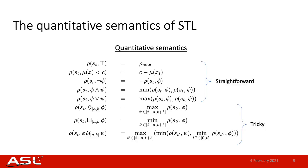Looking at the quantitative semantics shown earlier, a lot of the robustness formulas are pretty straightforward. The tricky part, however, is dealing with the temporal operators. I'll go into the construction of the eventually operator in the next slide, but the other temporal operators are very similar and the details can be found in the paper.